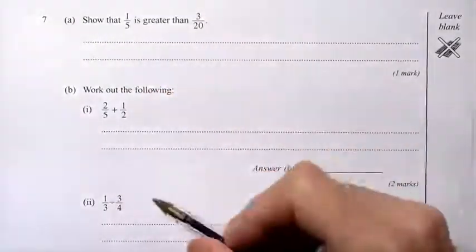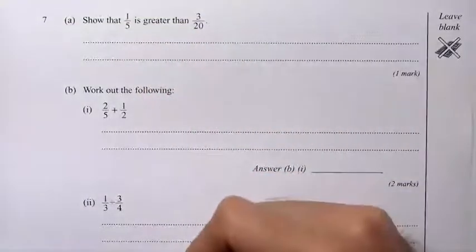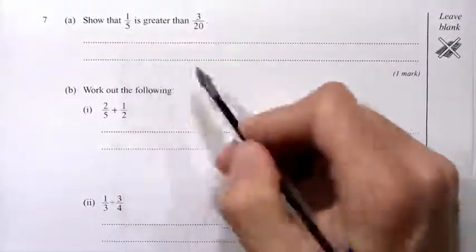Okay, show that 1 fifth is greater than 3 20ths. So we want to compare the size of these two fractions, and in order to do that we need to have the same number on the bottom of both.